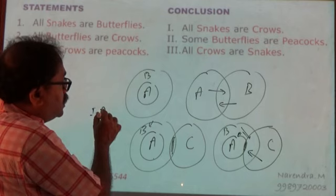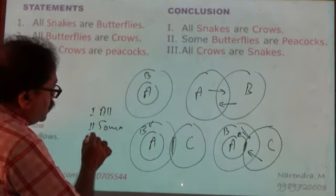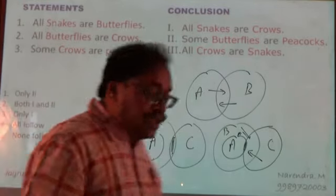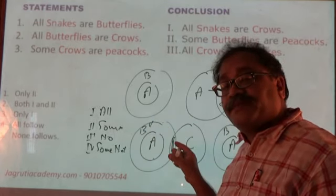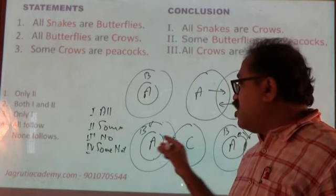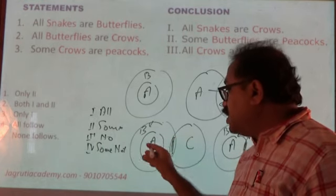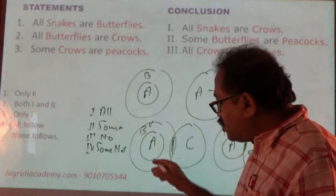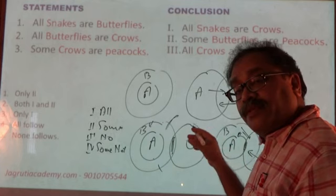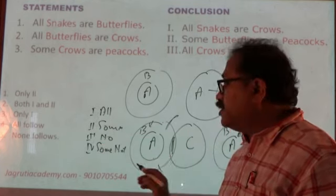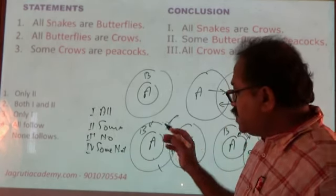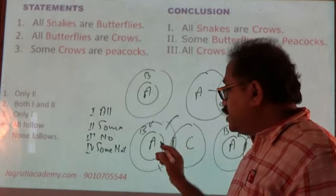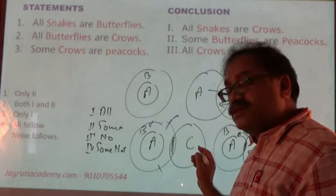When I cannot say anything about A and C, that means we have four types of statements: one starts with 'all,' second starts with 'some,' third starts with 'no,' and fourth starts with 'some not.' So when some B's are C's, I cannot say all A's are C's, I cannot say some A's are C's, I cannot say no A is C, and we cannot say some A's are not C's. Reverse: we cannot say all C's are A's, some C's are A's, no C is A, or some C's are not A's.